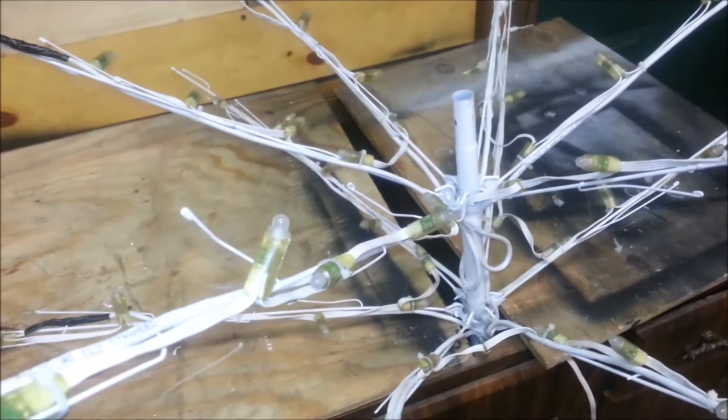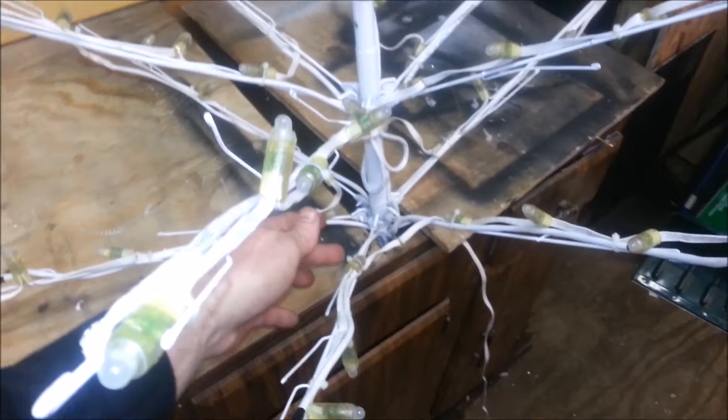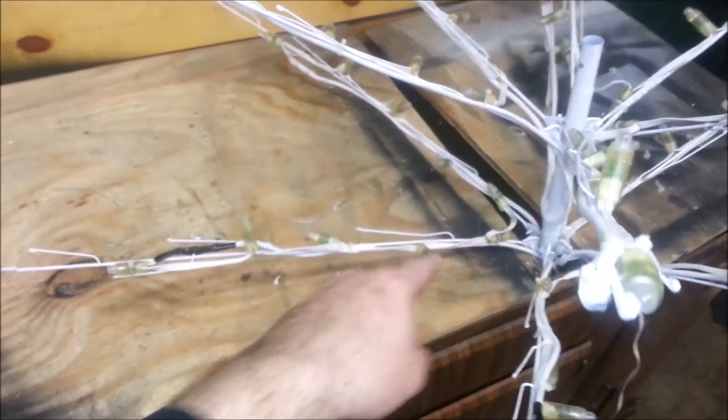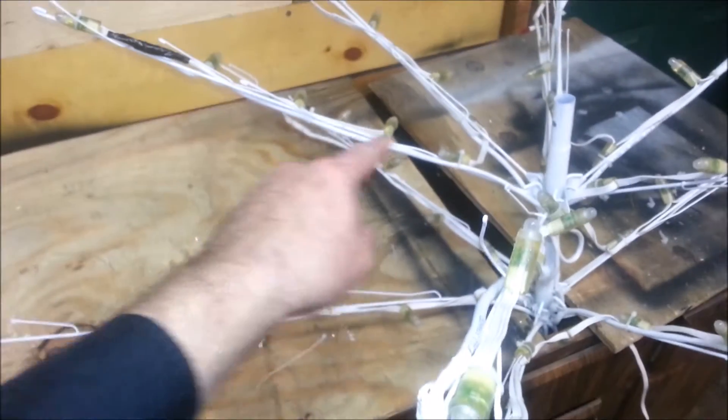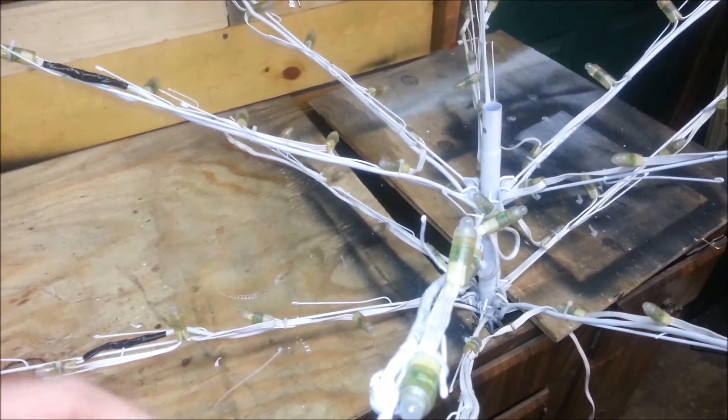This Home Depot twig tree originally had five LEDs on all these lower branches. I drew a schematic and I'll probably throw the picture up here in a second.